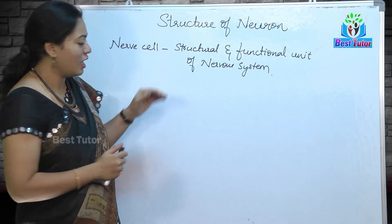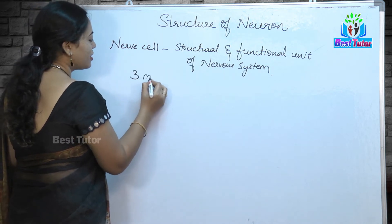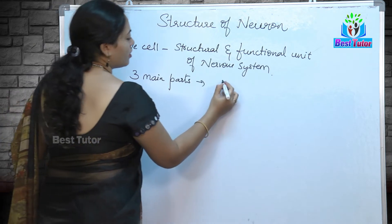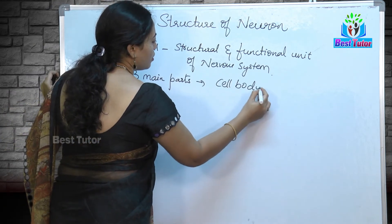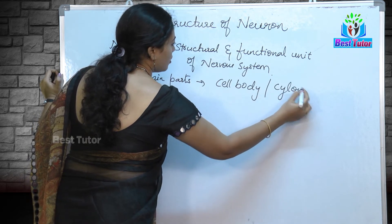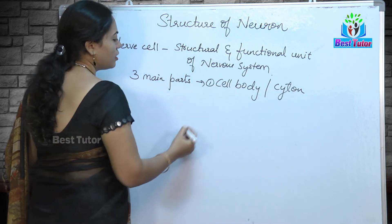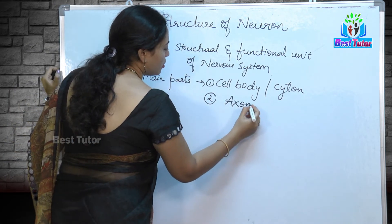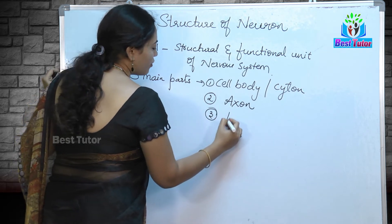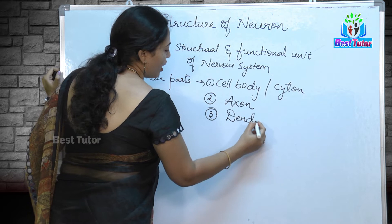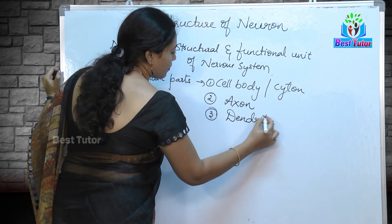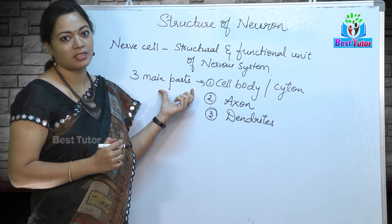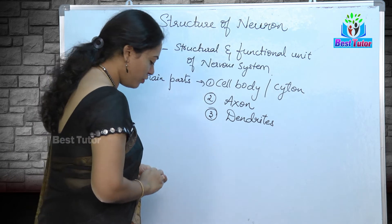If we examine the neuron, it consists of three main parts: the cell body or cytone, an elongated part known as axon, and some cytoplasmic projections known as dendrites. These three parts are very essential for any neuron to carry out nerve impulses through the nervous system.